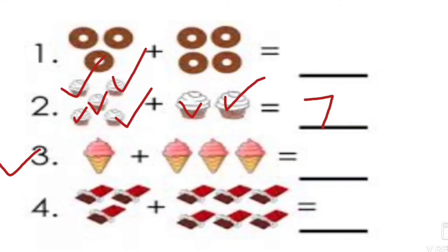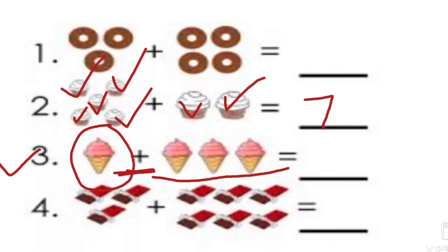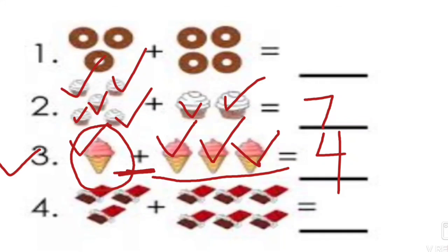Look at the next question — how many ice creams are there? One ice cream. What do we have to do? We have to add three more ice creams. So how many ice creams will we get altogether? One, two, three, four — four ice creams.